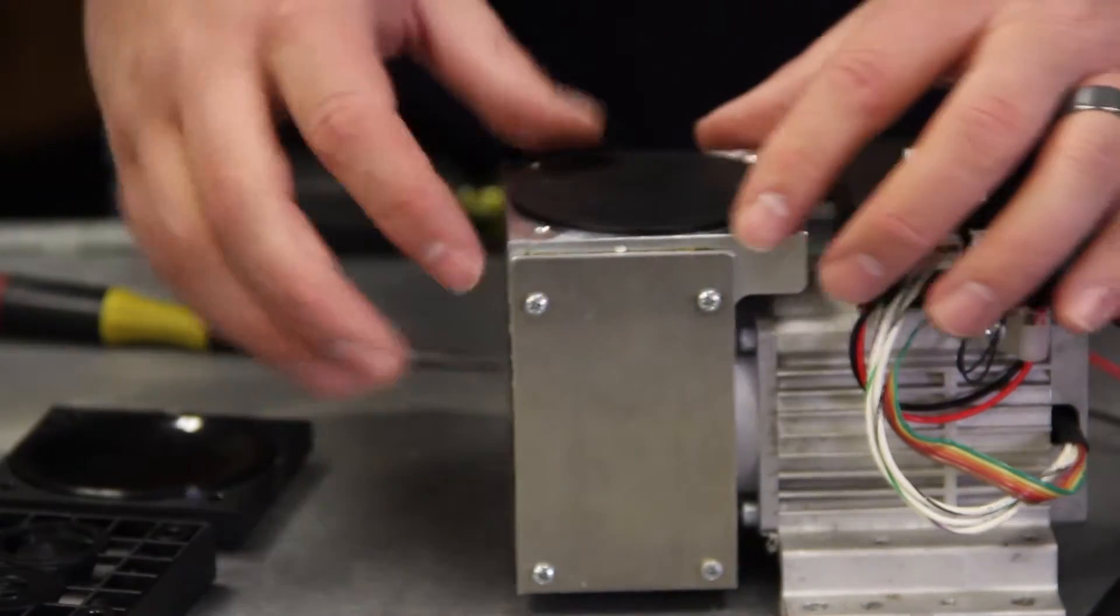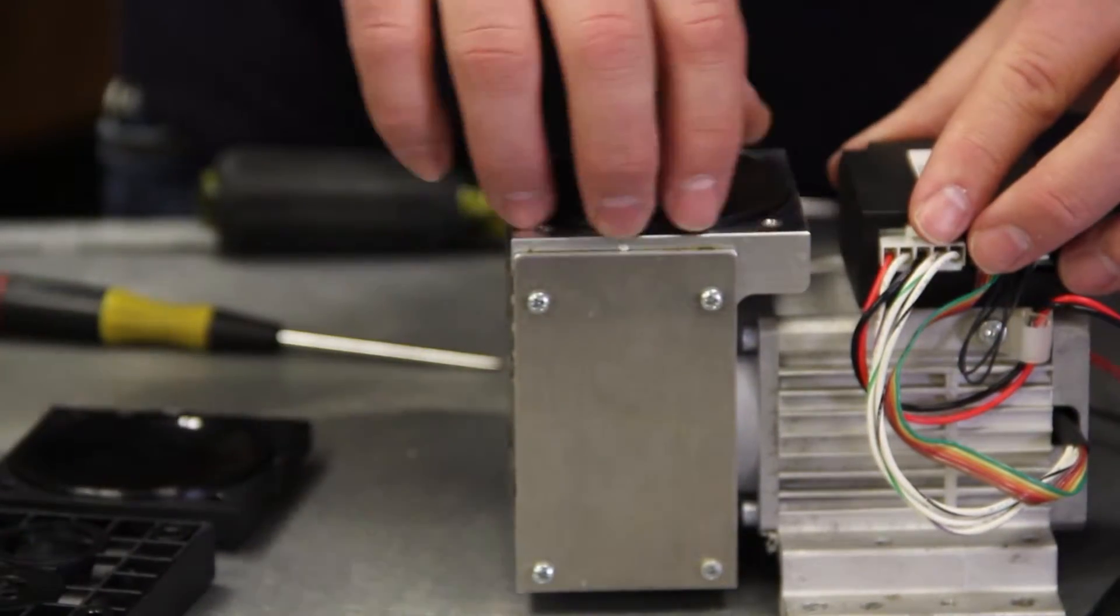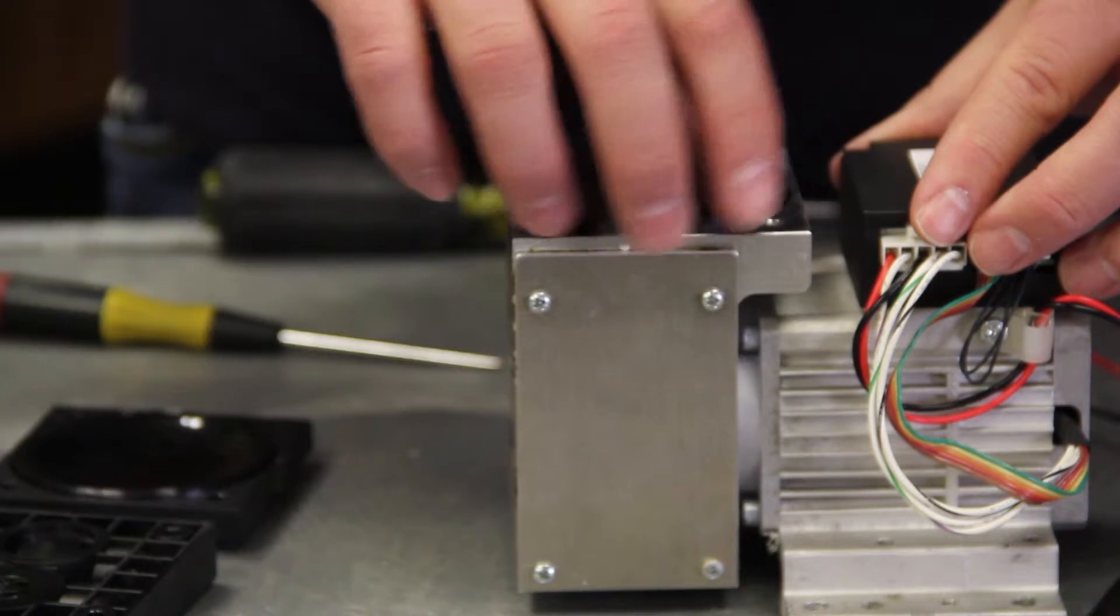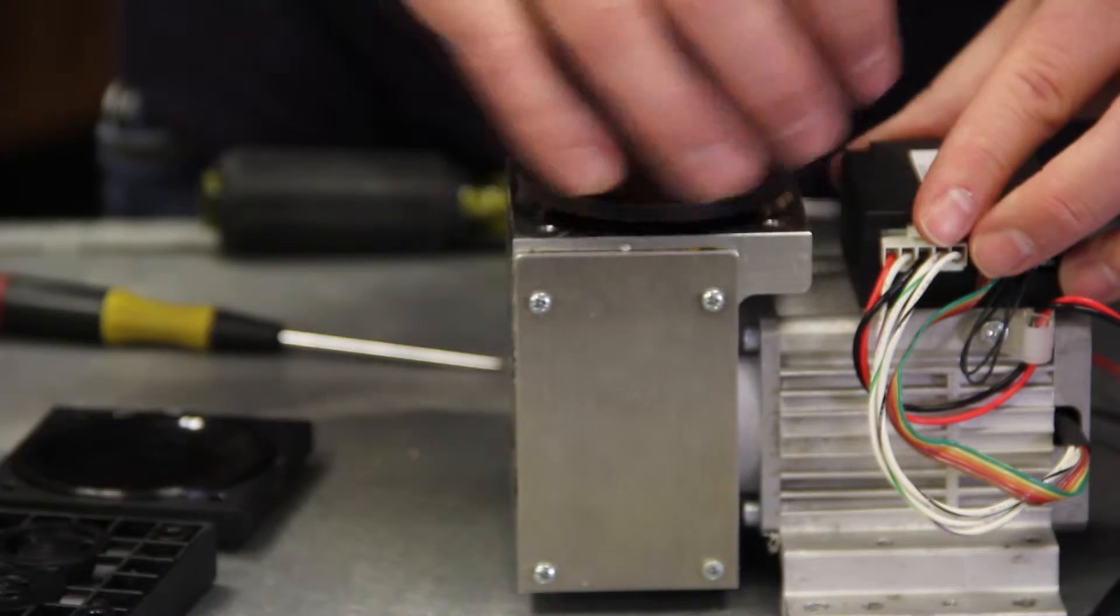Unscrew the old diaphragm in a counterclockwise fashion. Be careful there are some small washers at the bottom. You'll need to keep track of these as they give you proper spacing for the diaphragm itself.